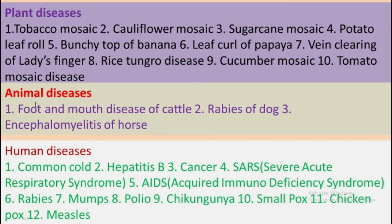Animal diseases caused by viruses include foot and mouth disease of cattle, rabies of dogs, and encephalomyelitis of horses. Human diseases caused by viruses include common cold, hepatitis B, cancer, SARS (severe acute respiratory syndrome), AIDS (acquired immunodeficiency syndrome), rabies, mumps, polio, chickenpox, smallpox, and measles.